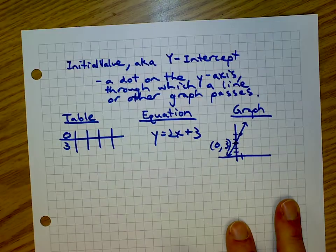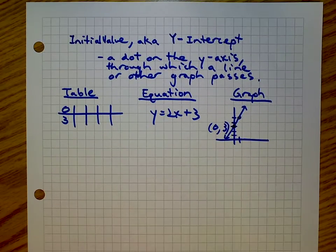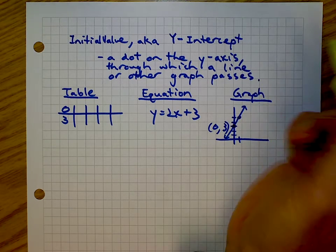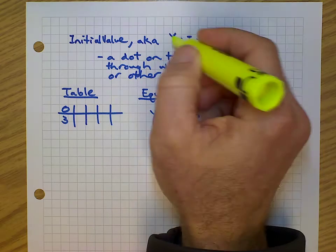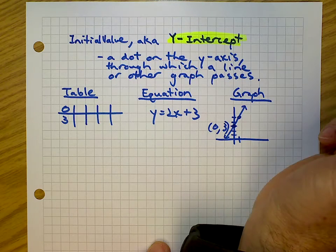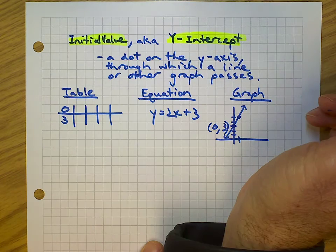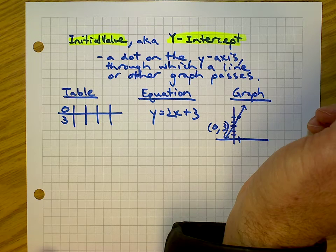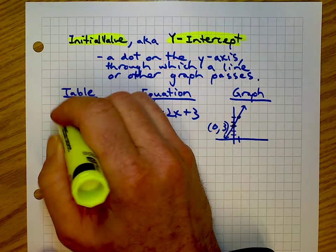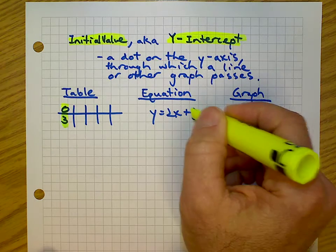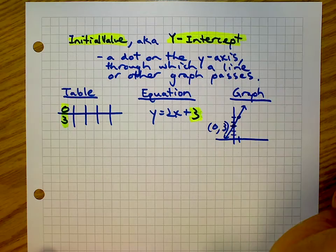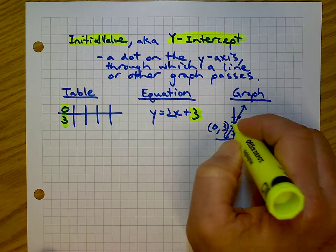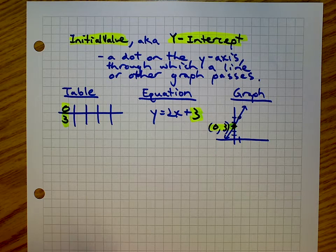On to some math content. First, we need to establish some background information. Can we agree that the y-intercept — sometimes called the initial value in your textbook — looks a certain way on a table, looks a certain way in an equation, and looks a certain way on a graph?